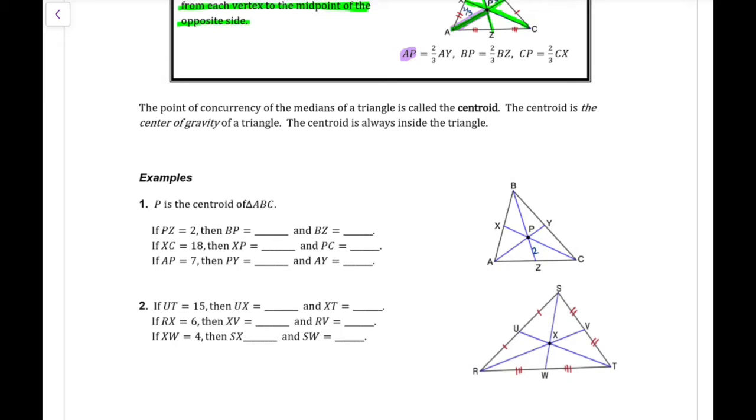If I have PZ and it's two, that's the short side. That's one-third of the whole length of the triangle. BP would be two-thirds. That's going to be twice as much as two, so we times the two by four. Four plus two gives us six for the BZ. If I look at XC equals 18, that whole side of the triangle is 18. So we're going to take that and divide it by three. If I divide 18 by three, I get six. That would be the short side. The long side is going to be twice that, which is 12. So XP would be six and PC would be 12.